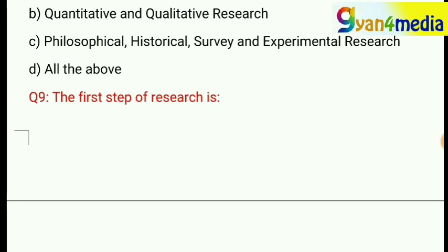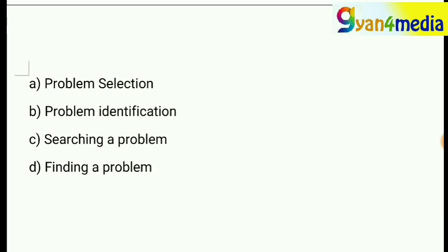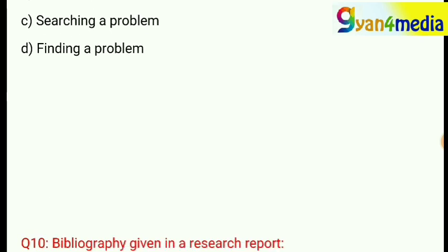Here comes a tricky question: the first step of research is — option A, problem selection; option B, problem identification; option C, searching a problem; or option D, finding a problem. All options are very close and neck to neck, so you have to pay attention to the terminology used in research methodology. The correct answer is option B — problem identification.